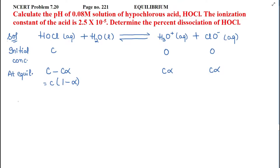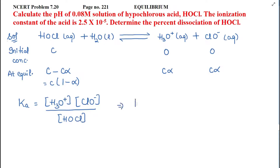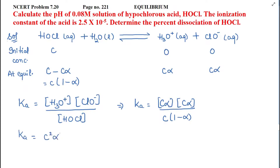Now we will find the dissociation constant Ka. Ka equals concentration of products — hydronium ion times ClO⁻ negative — divided by concentration of hypochlorous acid. So Ka equals C·alpha times C·alpha divided by C(1 minus alpha). The C squared and C cancel, giving Ka equals C·alpha squared divided by (1 minus alpha).